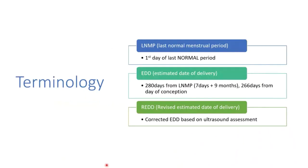First of all, you need to know the terminology. LNMP means last normal menstrual period — it is the first day of your last normal period. Normal in this context means the patient has a regular cycle of menses, and we take a 28-day cycle as normal. Pay attention: it is not when the period finished, it is when the period started. So if a patient has her period from 1st of January until 8th of January, the LNMP is 1st of January.